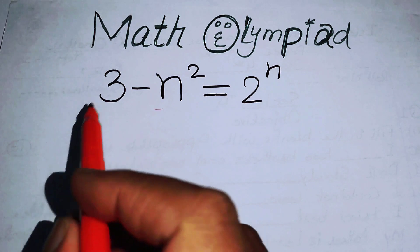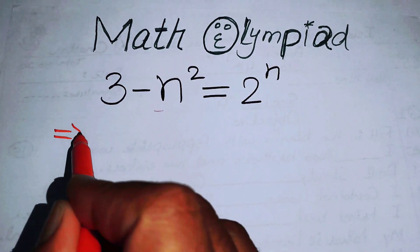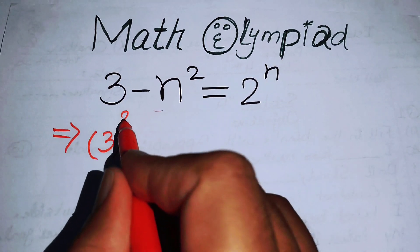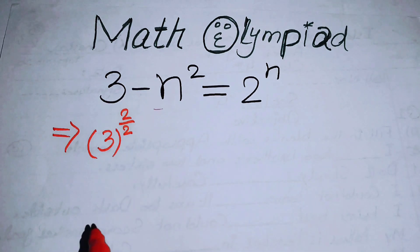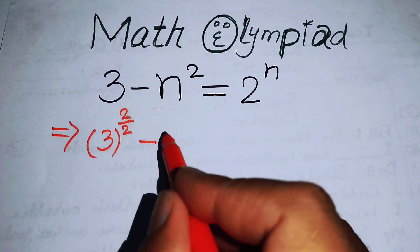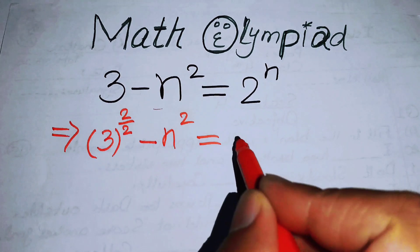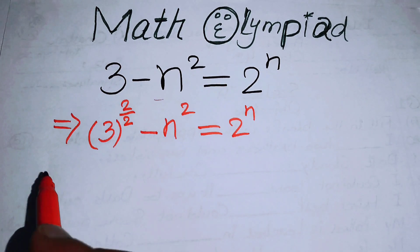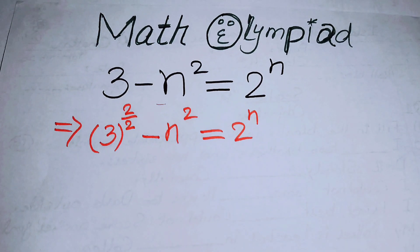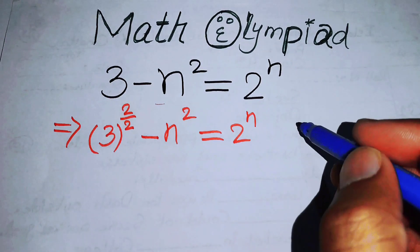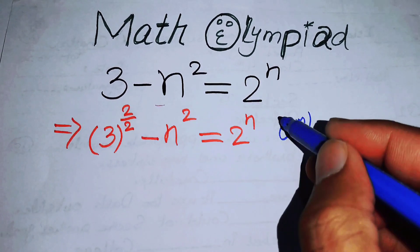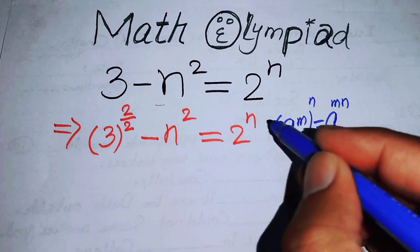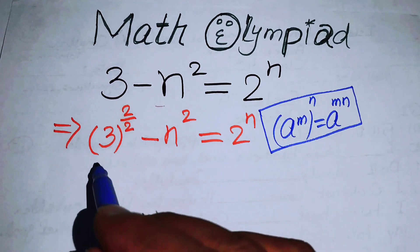The first thing we are going to do is rewrite the left hand side of this equation. We have 3, and we will multiply and divide its exponent by 2, minus n squared, and this whole equation equals 2 to the power of n. Now we will use the exponential law: if we have a to the power of m, to the power of n, it equals a to the power of m times n.